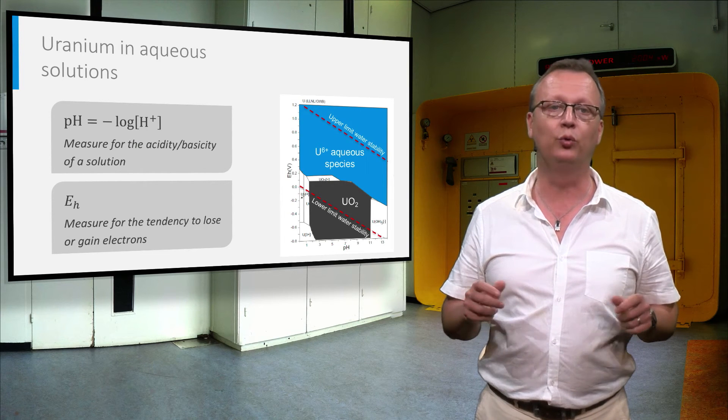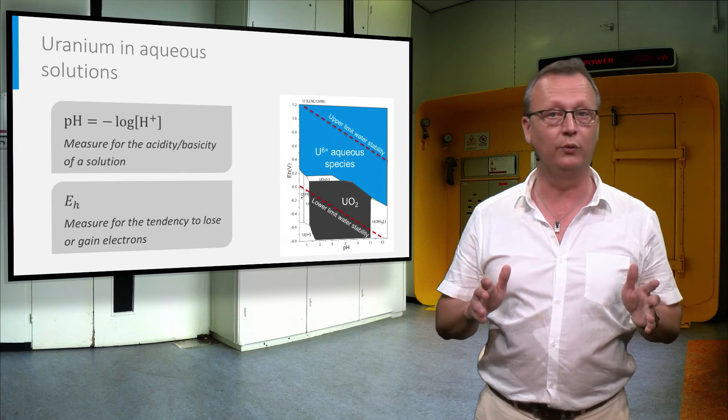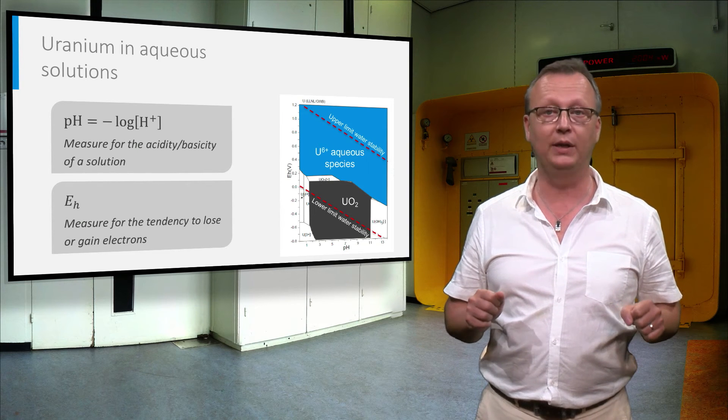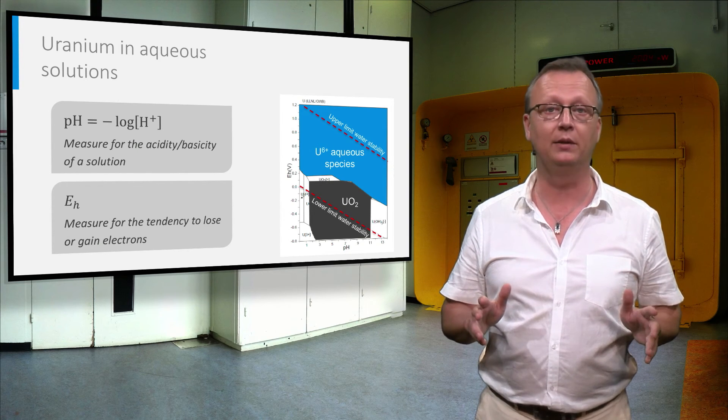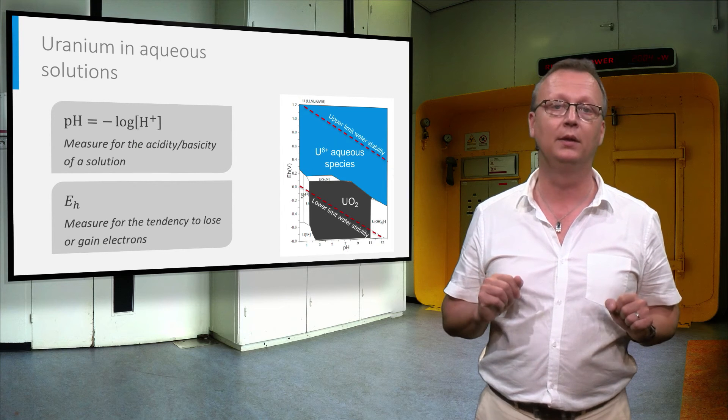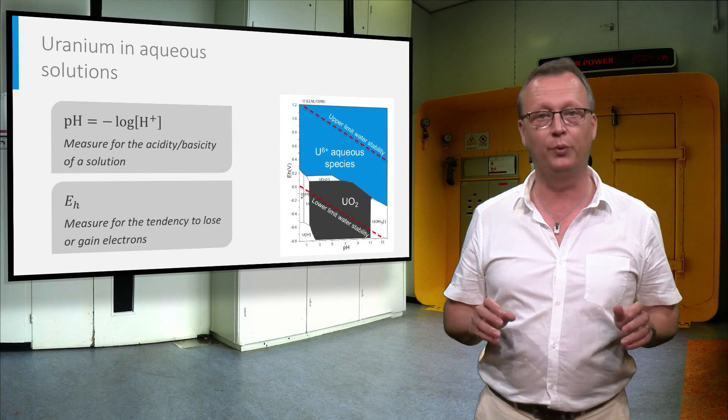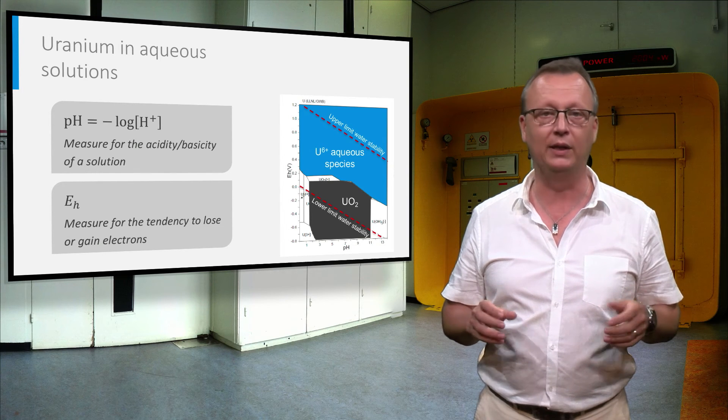In the area between the two red dotted lines, showing the stability domain of water, there are two main fields: the solid uranium dioxide, indicated by the black field, and a variety of hexavalent uranium aqueous species that are grouped in the blue field.